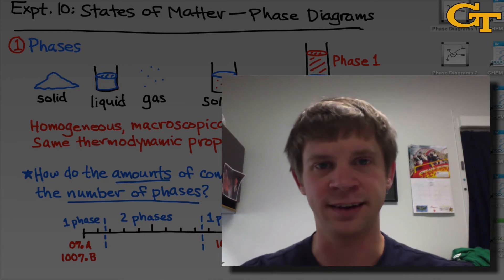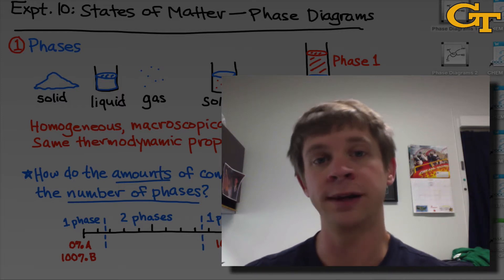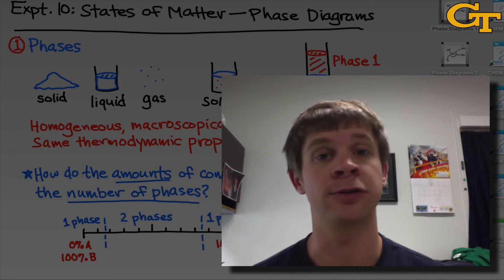Experiment 10 in Chem 1310 is titled States of Matter, Phase Diagrams. In this experiment we're going to explore mixtures of three different liquids: water, hexane, and n-propanol, and investigate how these three different liquids can mix to form different numbers of phases.